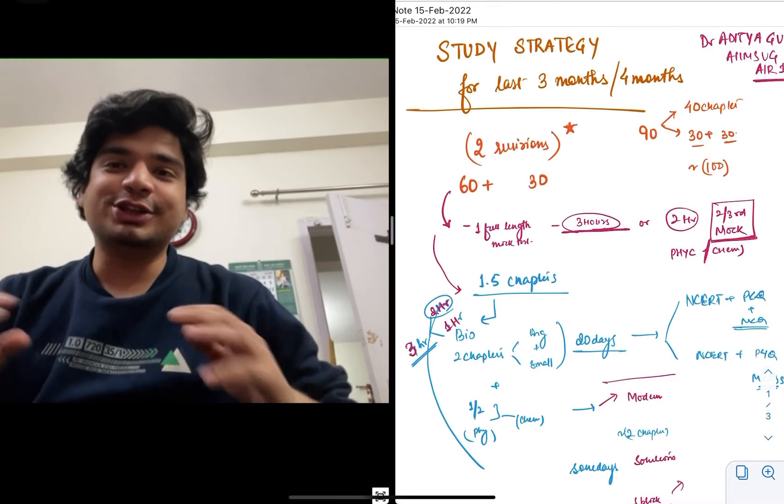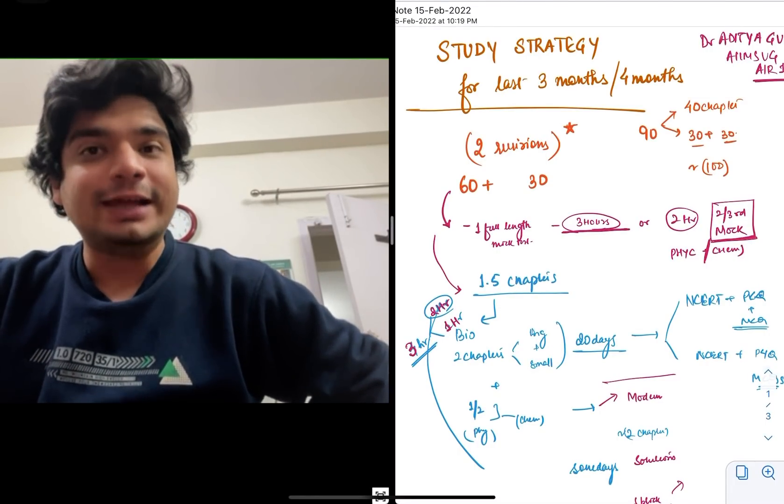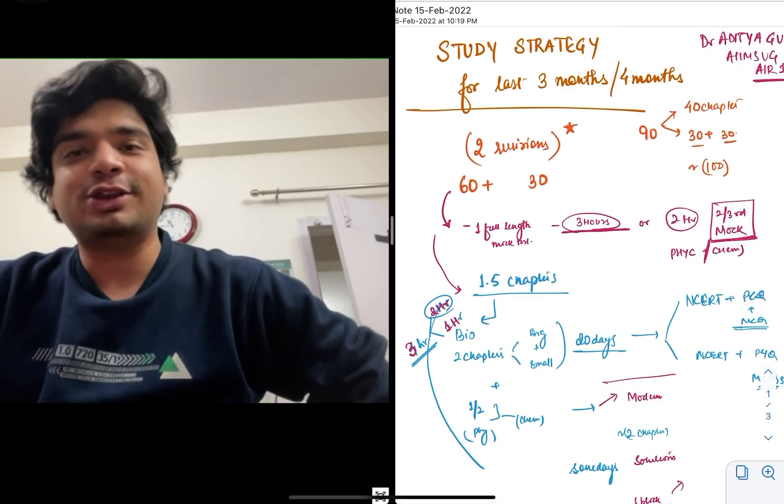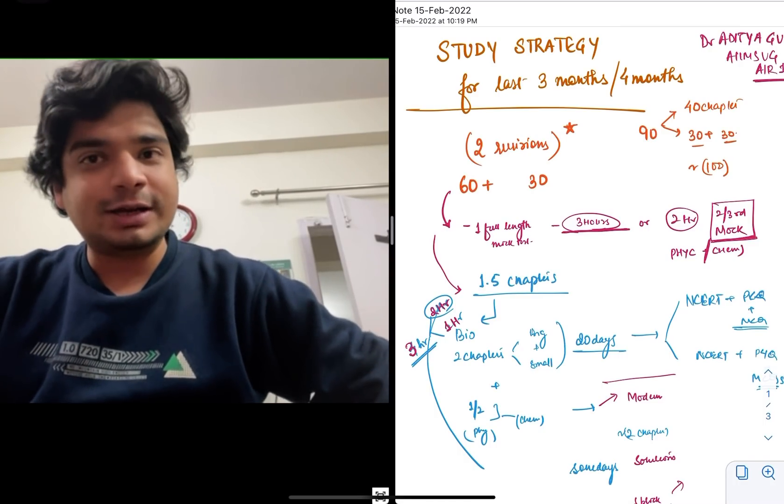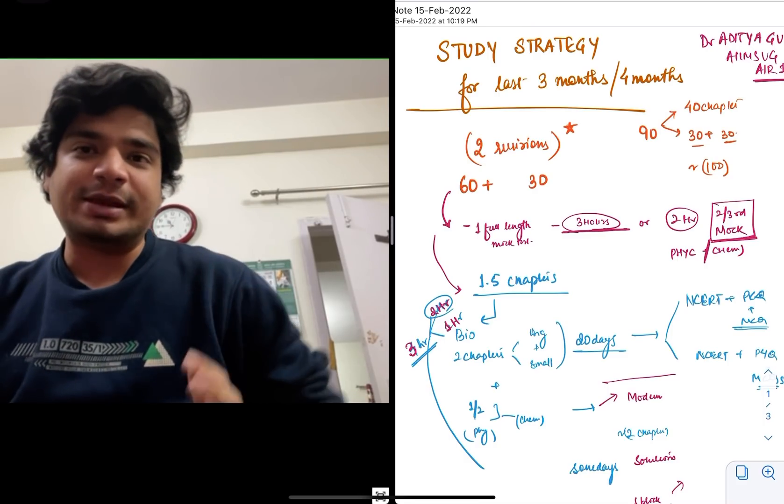Hello everyone, my name is Dr. Aditya Gupta. I secured All India Rank 10 in AIIMS Undergraduation Exam back in 2012. Having done my undergraduation from AIIMS, I did my MD in Pediatrics and now I'm currently pursuing my DM in Pediatric Oncology again from AIIMS.